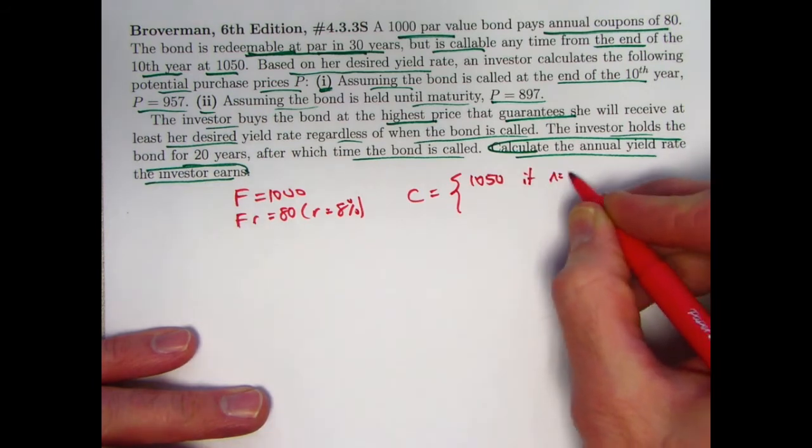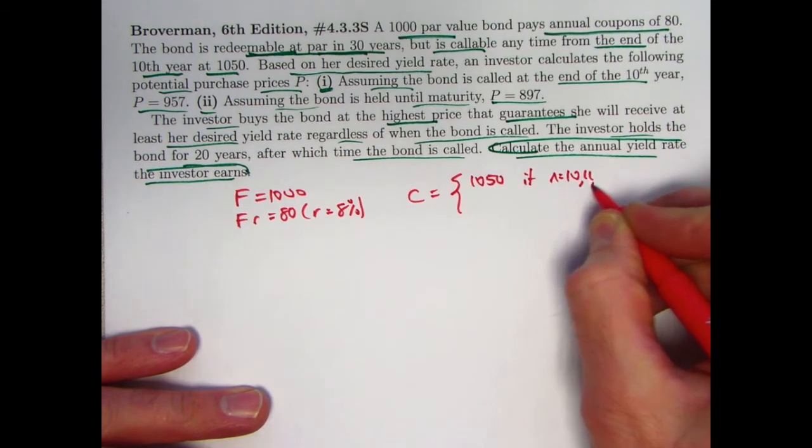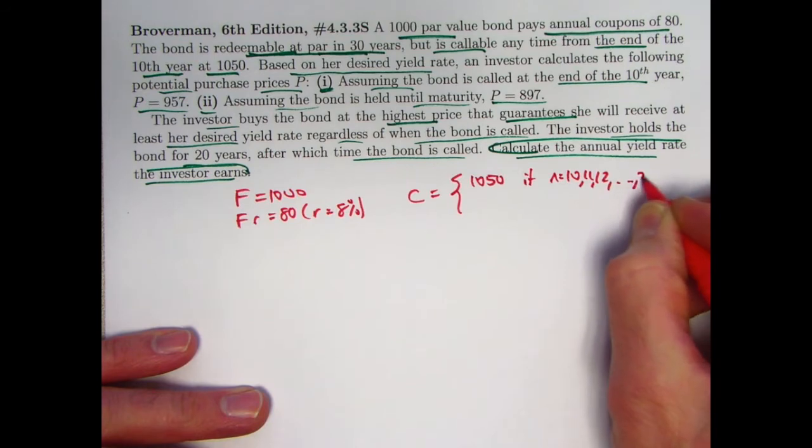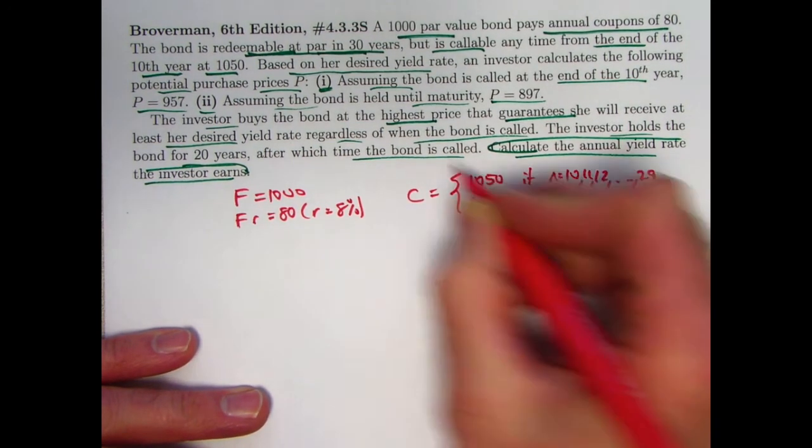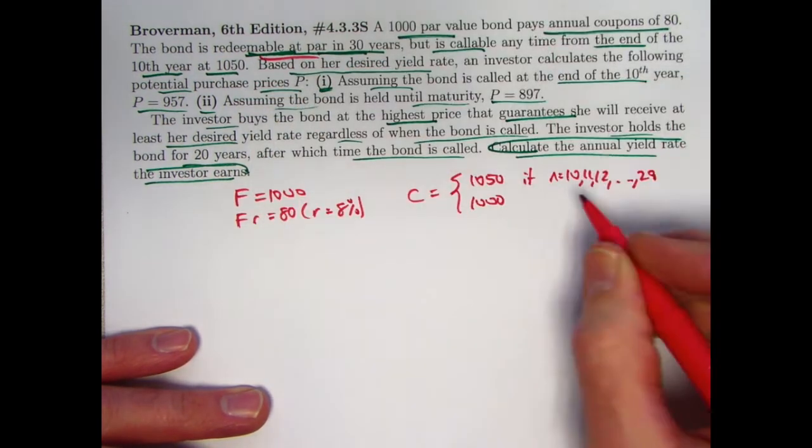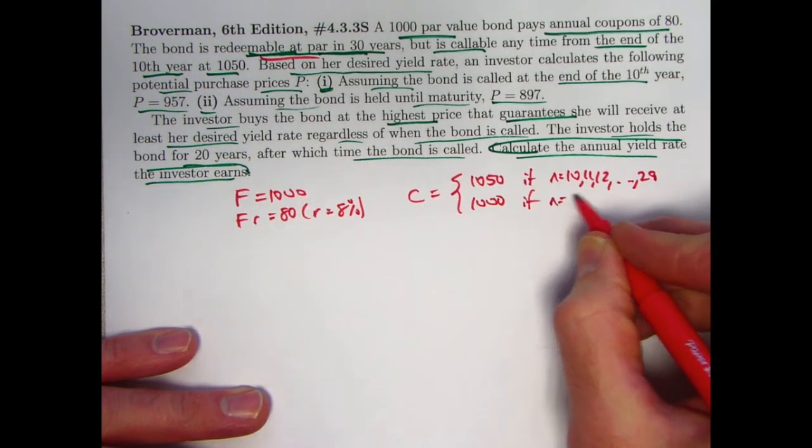It's 1,050 if N is 10, 11, 12, etc., through 29, and it's 1,000 because it says it's redeemable at par at the end, if N equals 30.